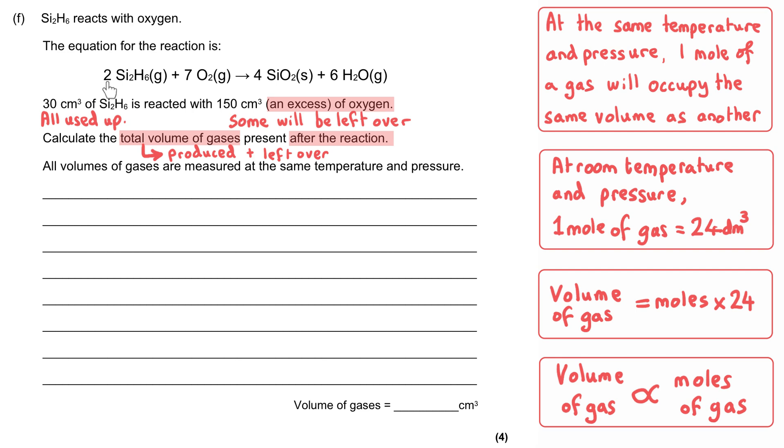We're shown here that 2Si2H6 reacts with 7O2. To turn that into the language of moles, this means 2 moles of Si2H6 will react with 7 moles of oxygen, or to turn it into volume, 2 cm³ will react with 7 cm³ of oxygen. This is because volume is proportional to moles.